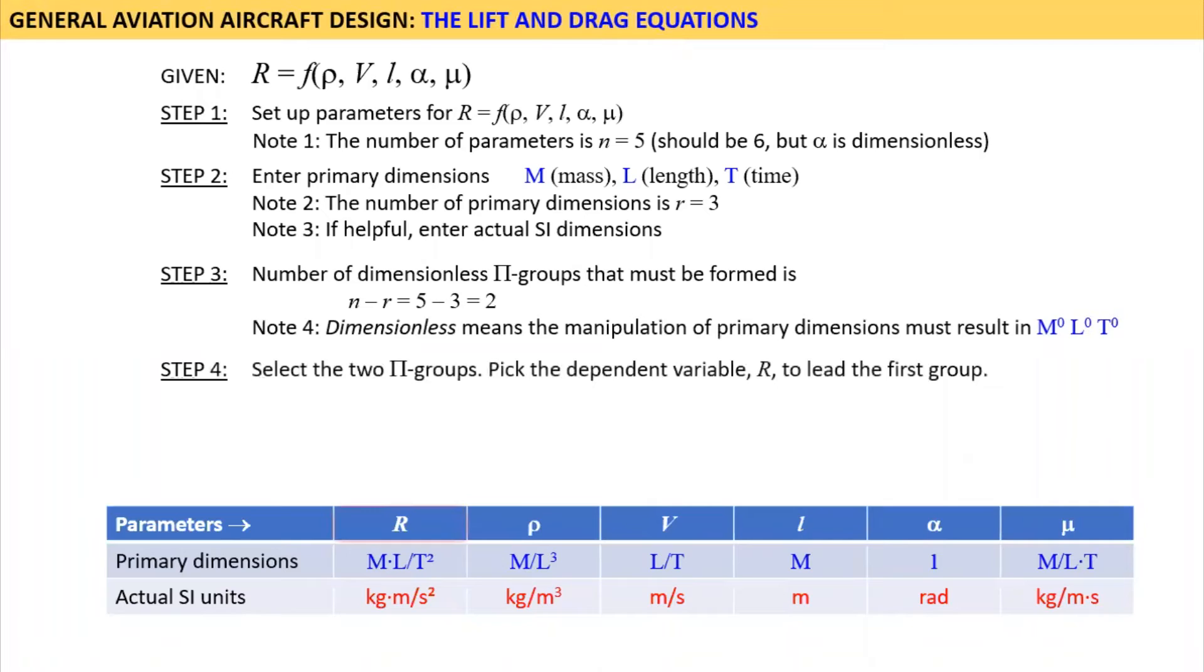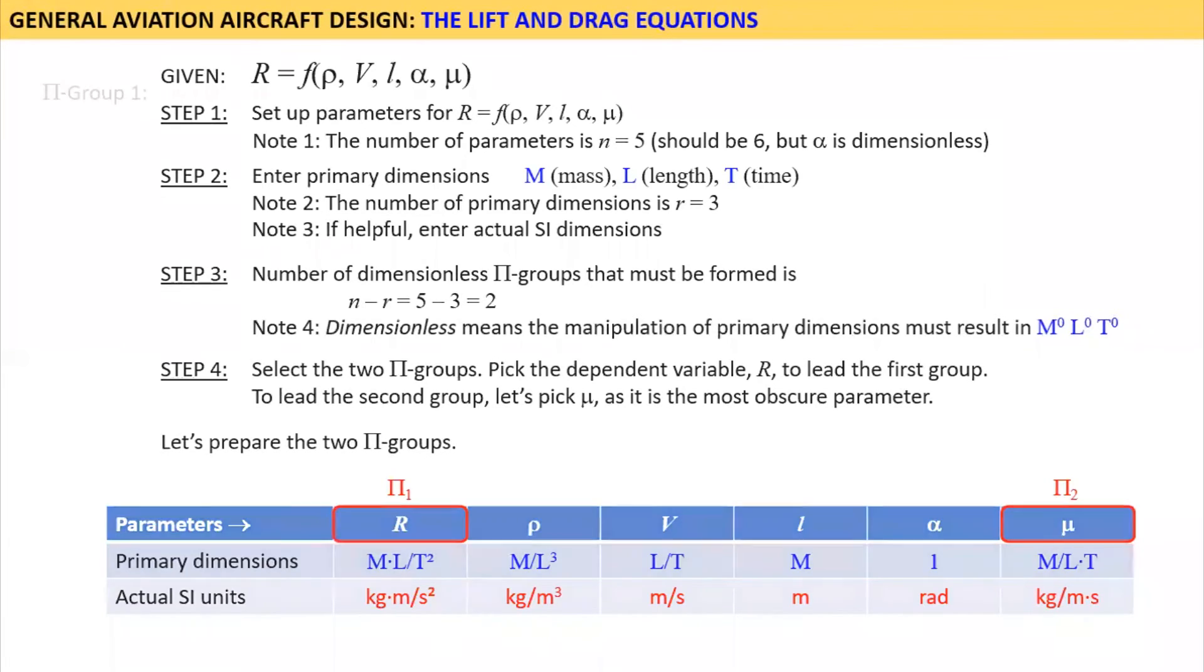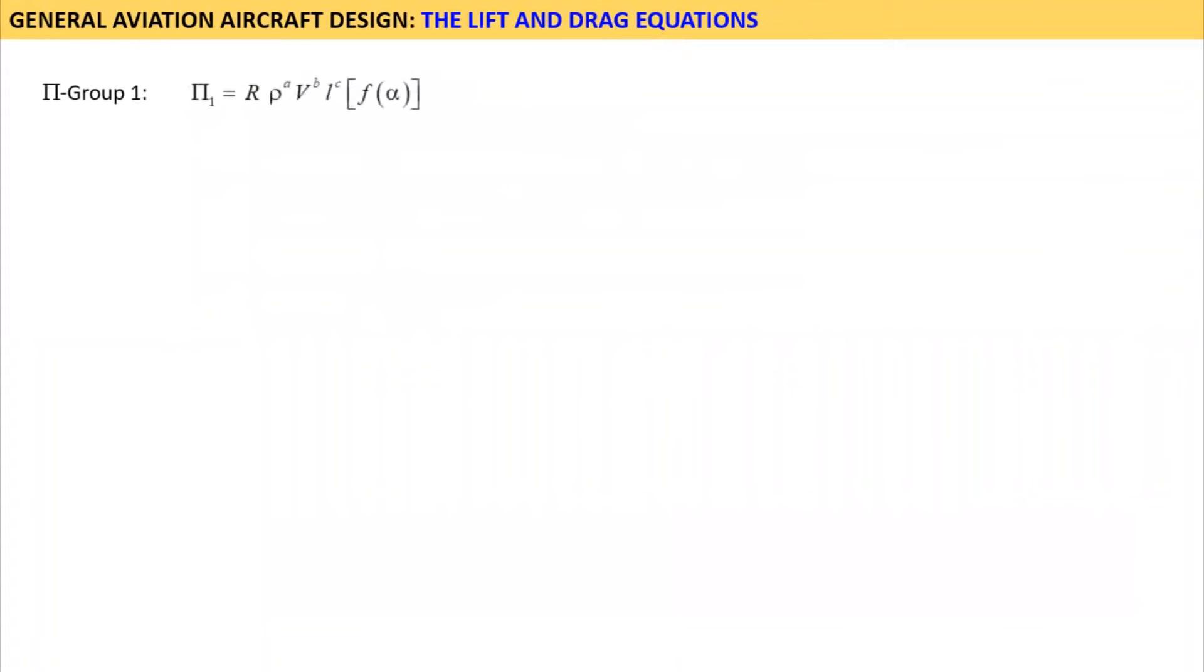Step 4. Select parameters for the two pi groups. Pick the dependent variable R to lead the first group. To lead the second group, let's pick mu, as it is the most obscure parameter of the batch. Now let's prepare the two pi groups. The first pi group consists of the product R times rho to the power A times V to the power B times L to the power C times the dimensionless function of alpha that accounts for the orientation of the body in the fluid. Here it is simply included for completion. It does not contribute to the results because it is dimensionless.